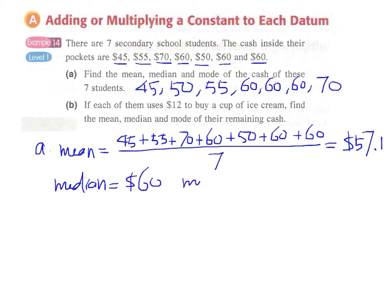And of course the mode, the amount or the number with the highest frequency is $60 too because we have 3 60s here.